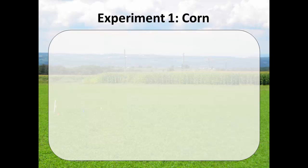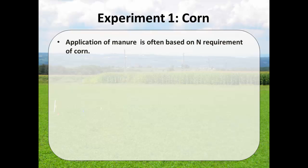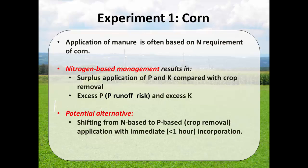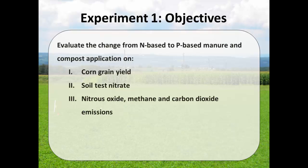Let me give you a brief introduction on why we started this study. When you apply manure based on the nitrogen needs of a corn crop, you over-apply phosphorus and potassium compared to crop removal. That can cause agro-environmental issues such as high-K forages and high phosphorus in the soil causing phosphorus runoff. A potential alternative is to shift from N-based to P-based management with tillage incorporation, which conserves ammonia from being lost and provides nitrogen for the corn crop. Our objective was to evaluate this shift from N-based to P-based management.